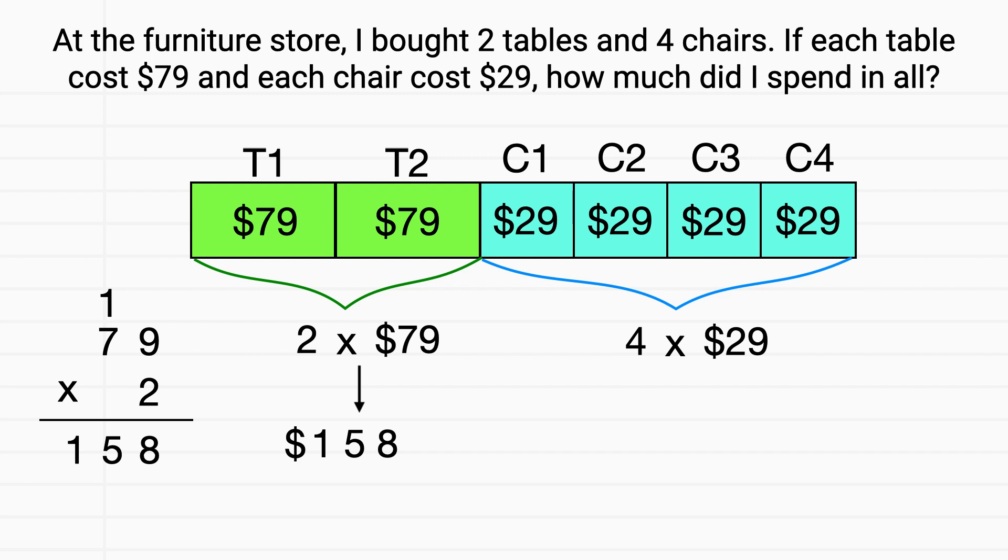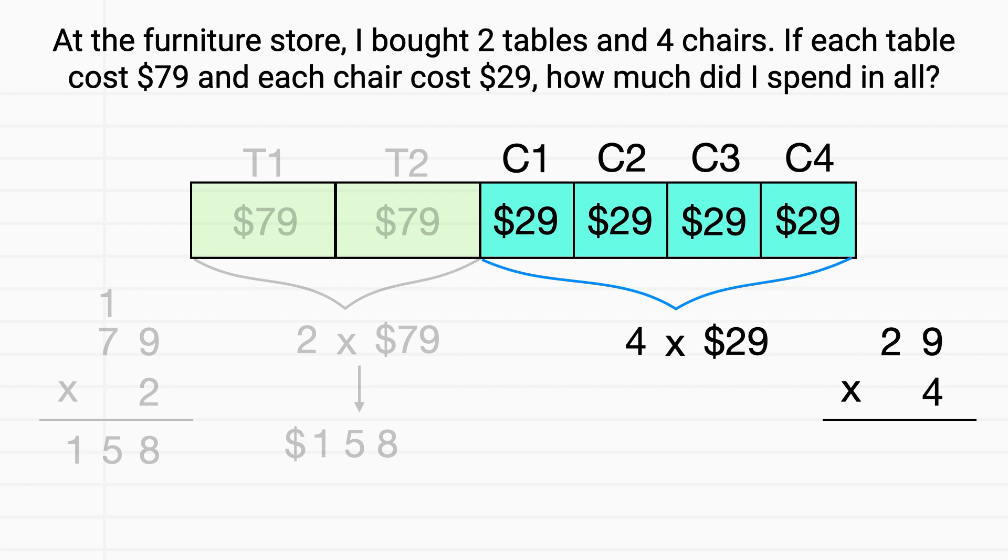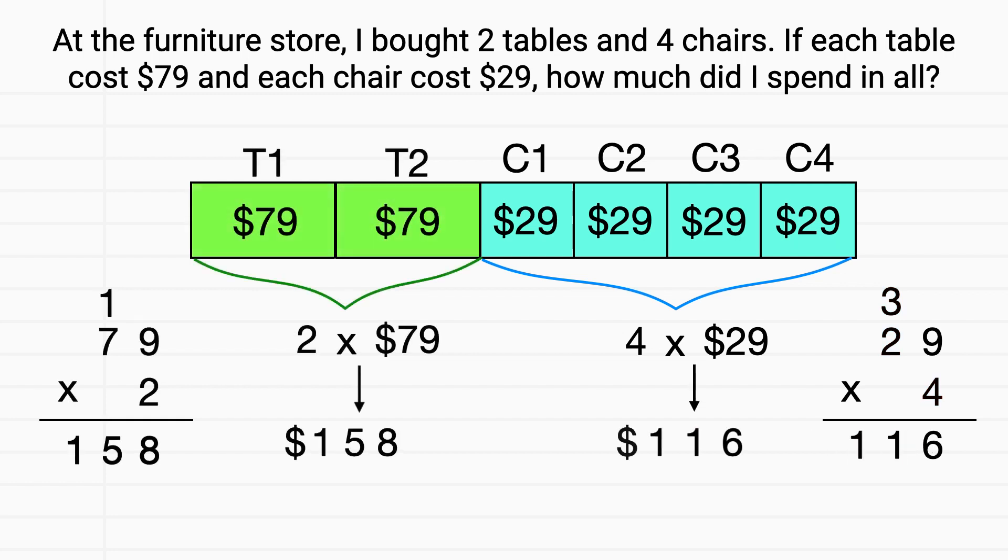Now let's focus on our chairs. I'll multiply 4 times 29 like this. 4 times 9, that's 36. Then 4 times 2 is 8, plus the 3 we carried is 11. So all in all, 4 times 29 is $116.